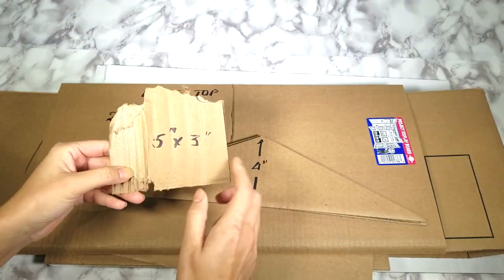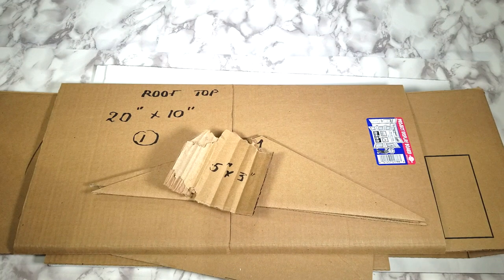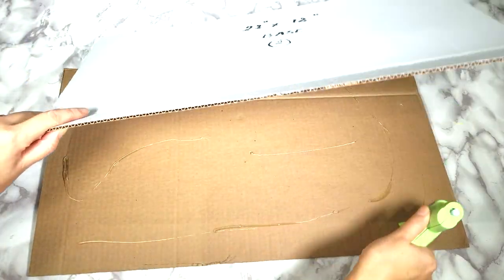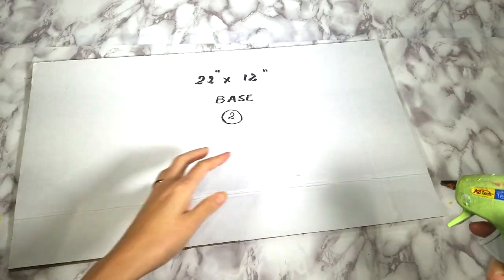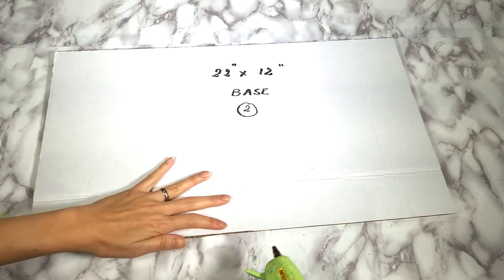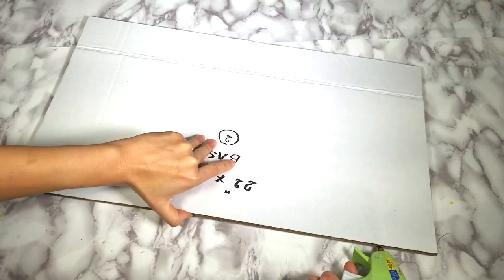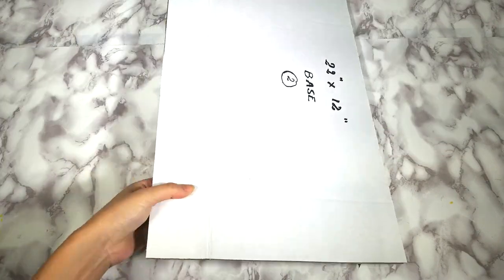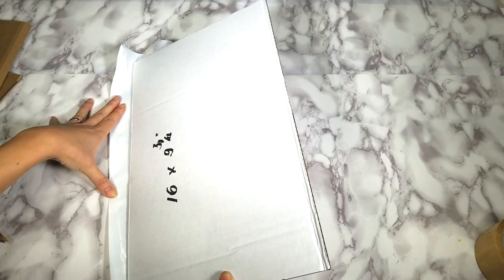Okay so let's put the house together. First I start by adding hot glue to the base pieces to glue the two pieces together. I just have hot glue all around the edge as well.